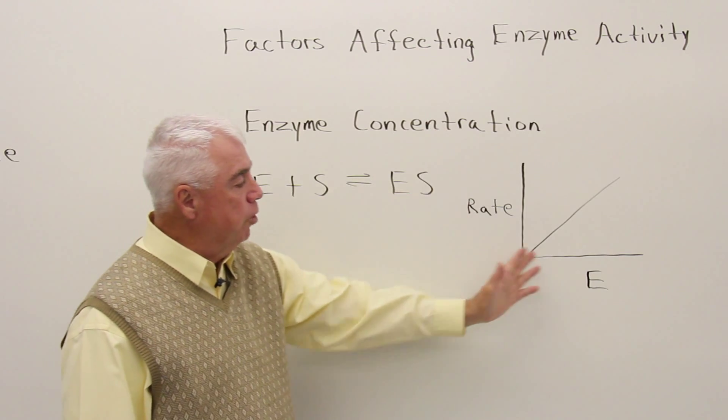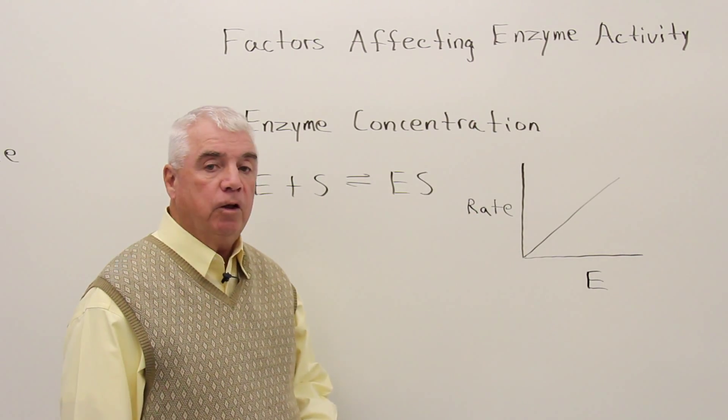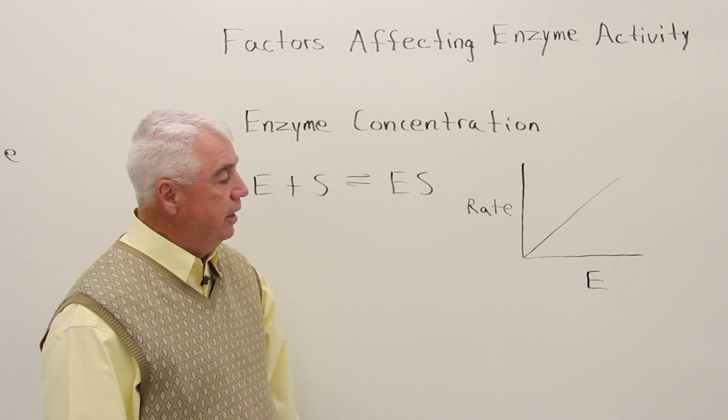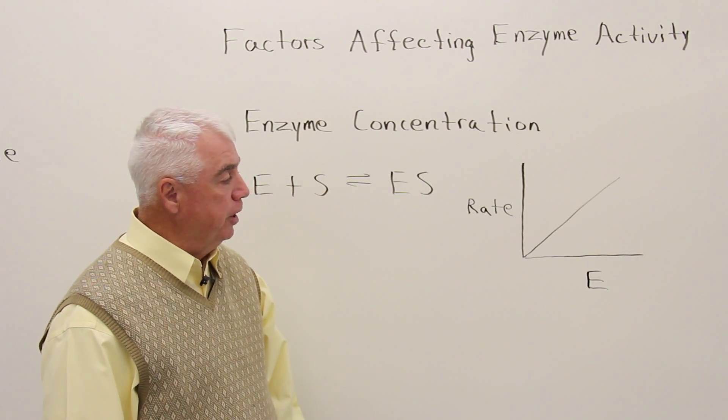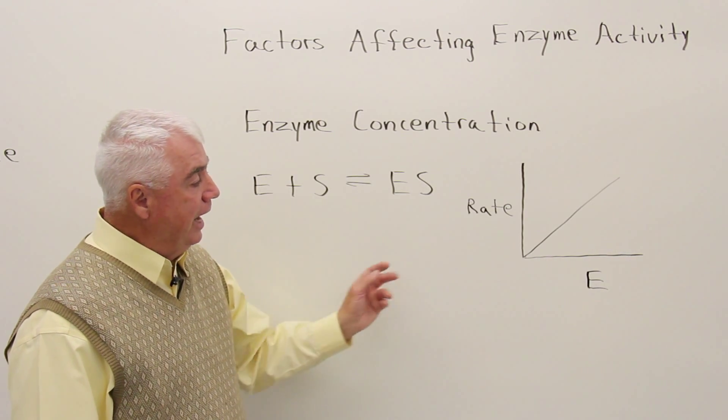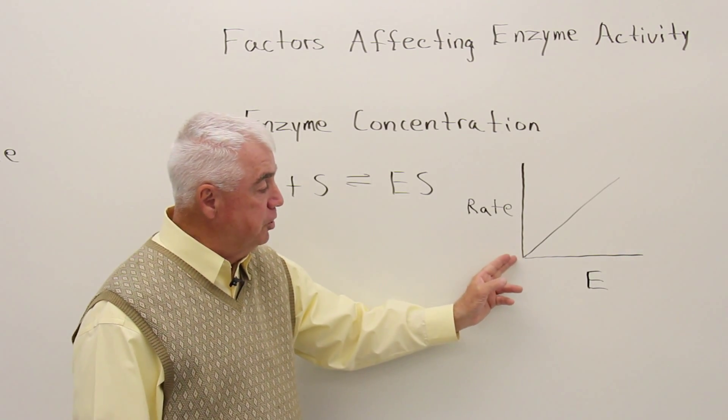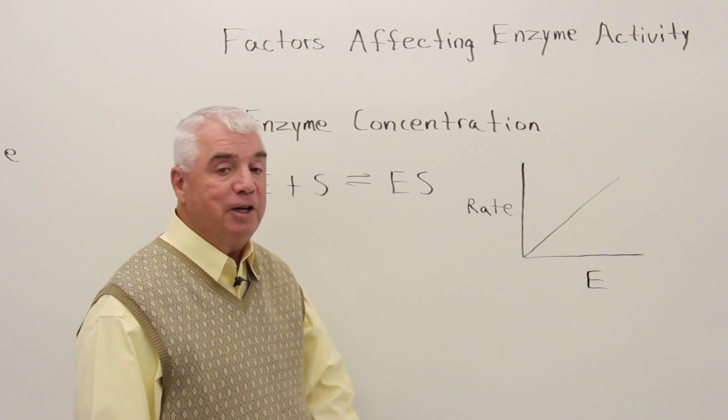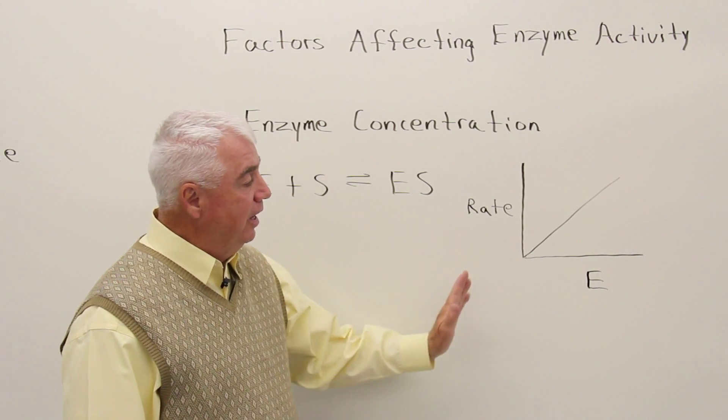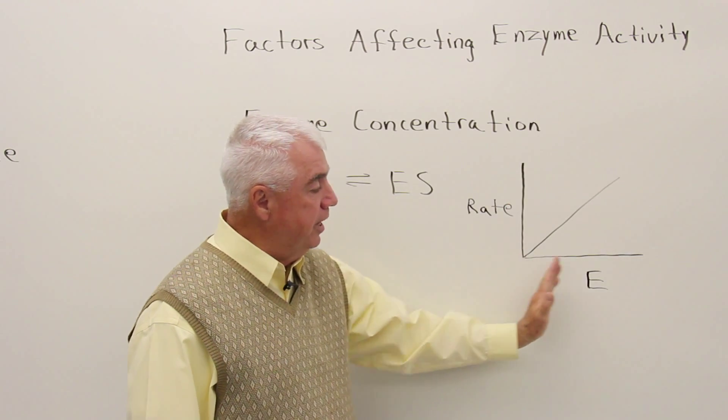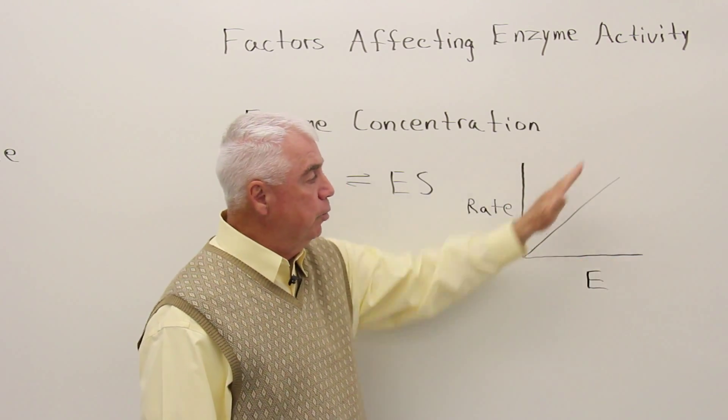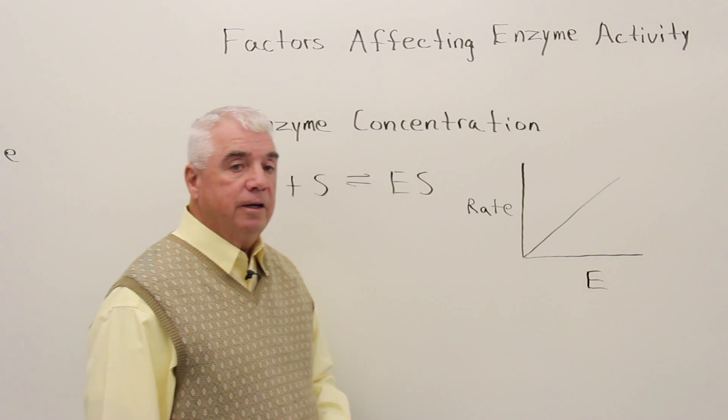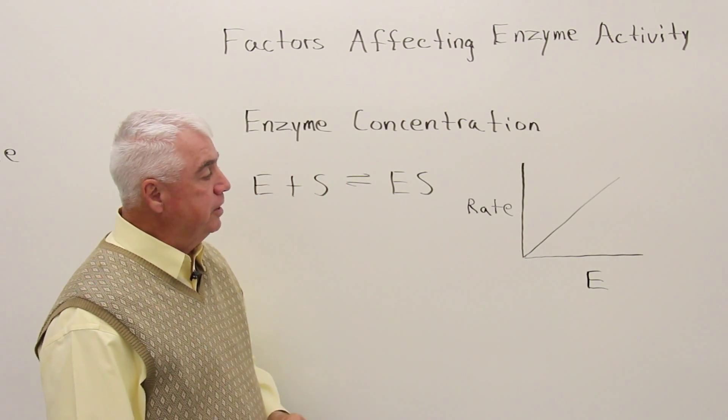Over here I've drawn a graph where the rate is on the vertical axis and down here on the horizontal axis is the enzyme concentration. And as you might expect at time zero, without any enzyme present, the rate is going to be zero. And what this graph says is that as we add enzyme, the reaction goes faster and faster. So the line rises in this fashion.